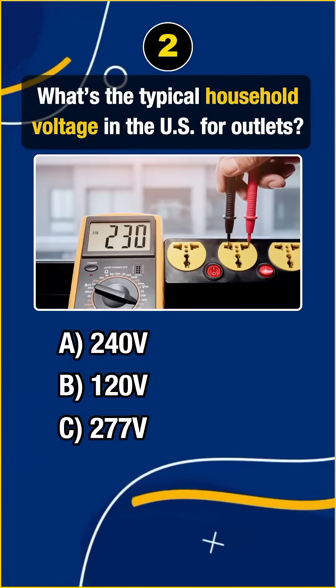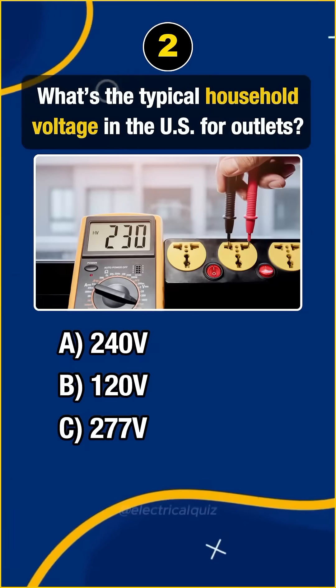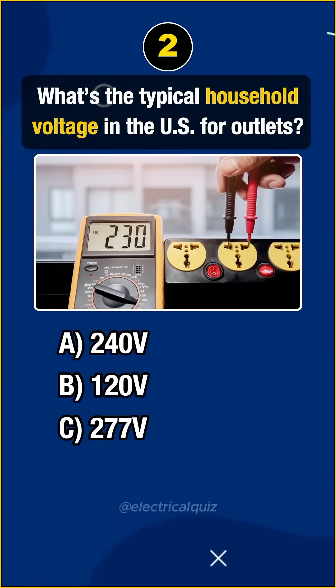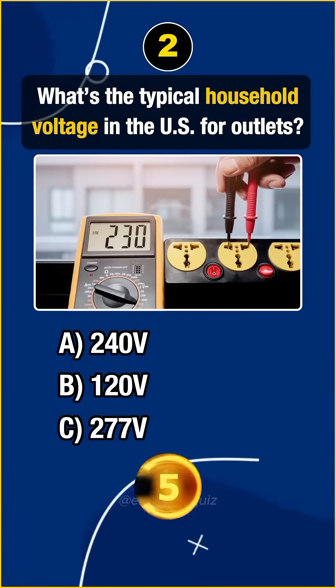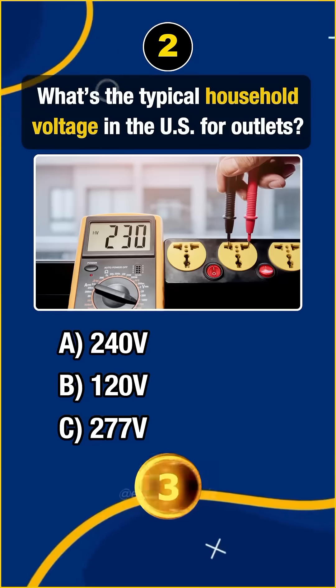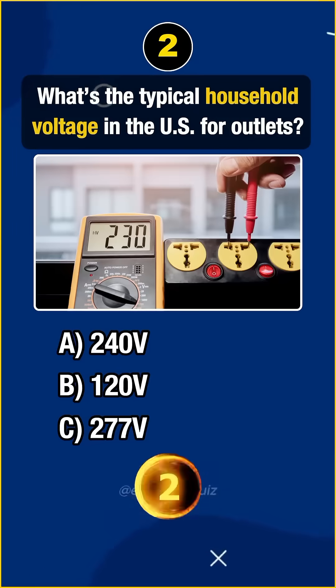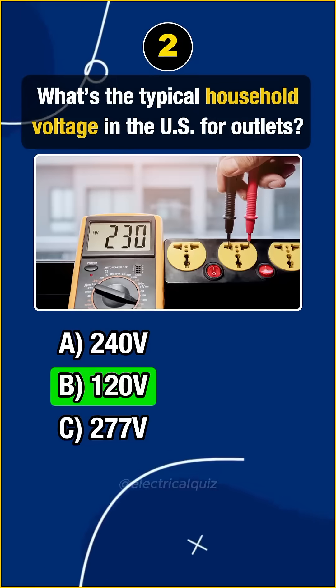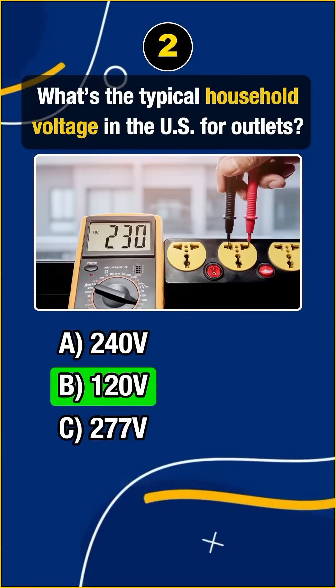Question 2. What's the typical household voltage in the U.S. for outlets? Answer: B. 120 volts.